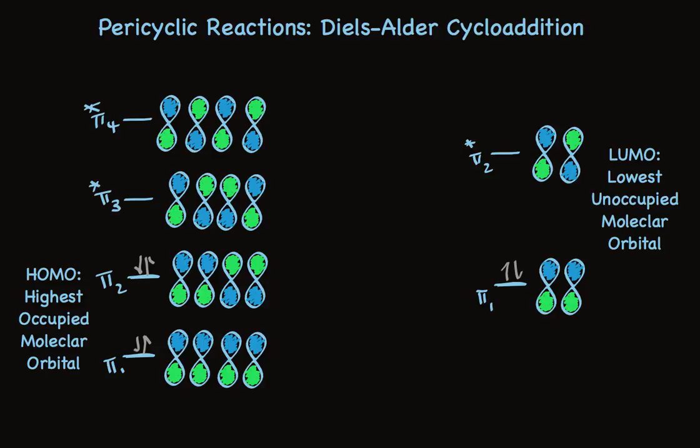It turns out for understanding the four plus two cycloaddition reaction of the Diels-Alder, we need to focus on the highest occupied molecular orbital of the diene. That's the partner from which electrons flow. And we need to focus on the lowest unoccupied molecular orbital of the dienophile. That's the partner into which electrons flow. So we're looking at the orbital that's highest occupied that has electrons, and the orbital that's lowest unoccupied that doesn't have electrons.